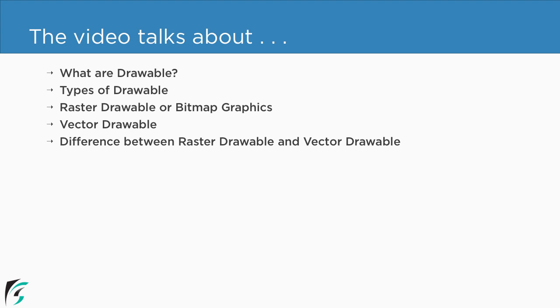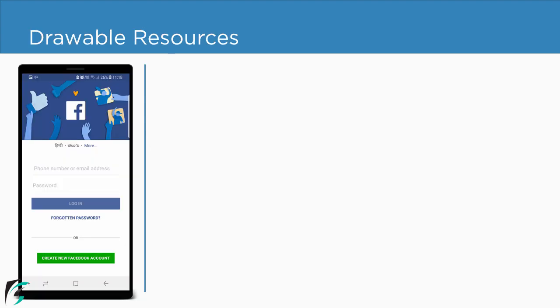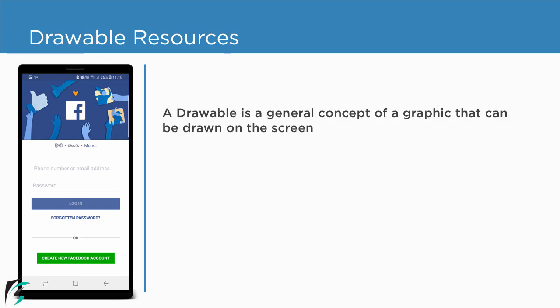So firstly, let's see what exactly we mean by drawable resources in Android. A drawable in the context of an Android application can be defined as a graphic that can be drawn on the screen. For example, on the left we have the Facebook application, and the image being displayed on the screen is basically a drawable resource.